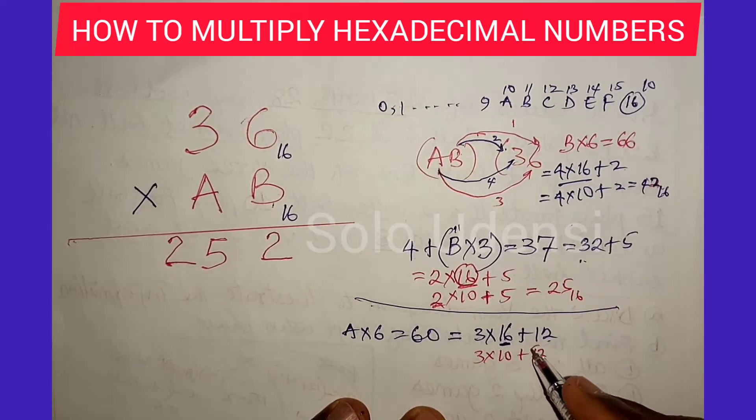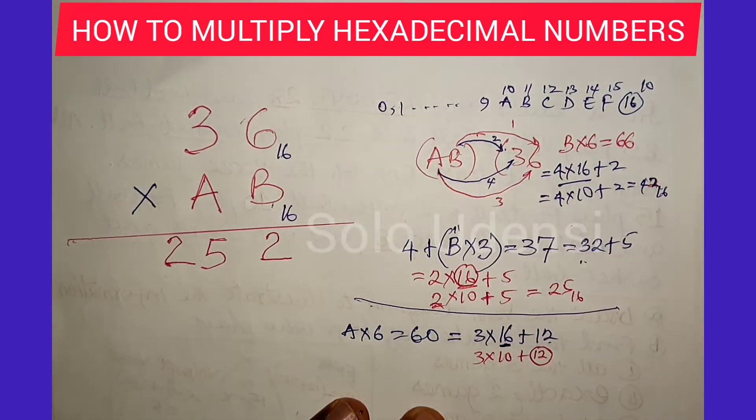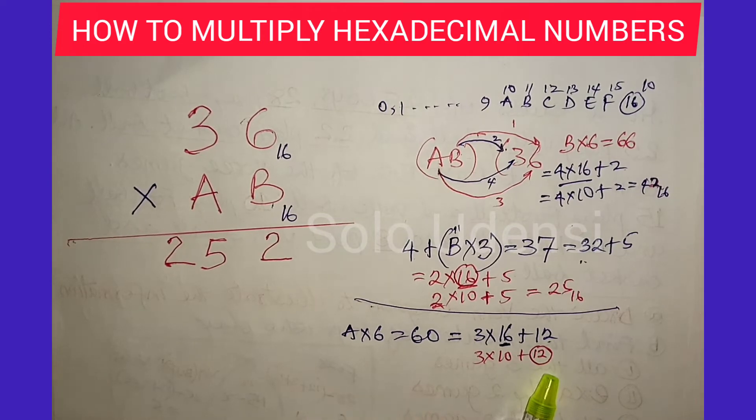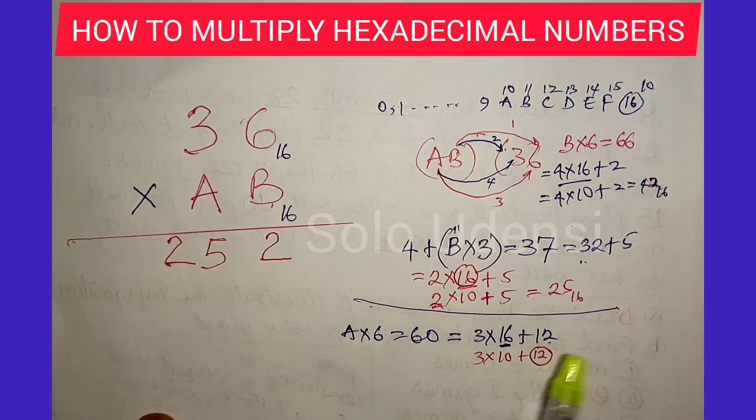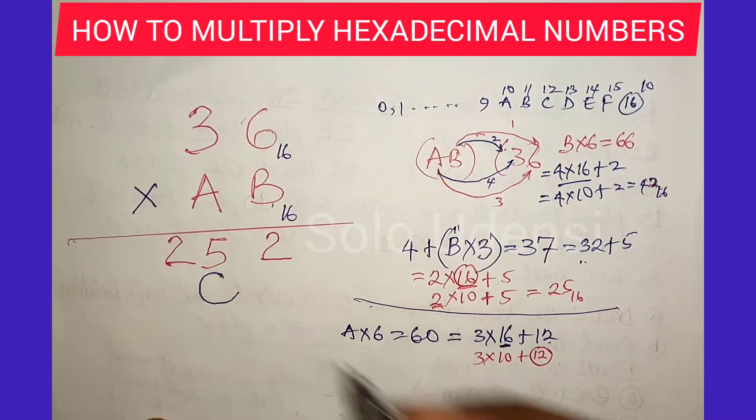And remember that 12 is equal to C. So we write C and carry 3.